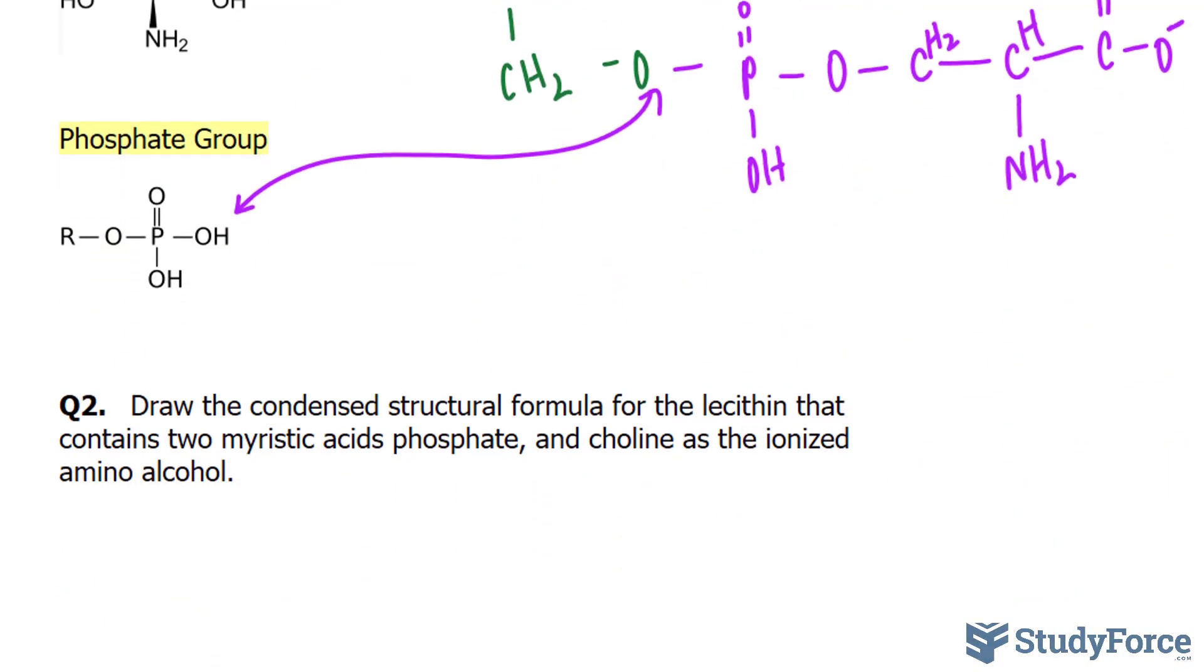In question number two, draw the condensed structural formula for lecithin that contains two myristic acids, phosphate and choline, as the ionized amino alcohol. Myristic acid, once again, is a saturated fatty acid, and it contains 14 carbons. So write down 14:0.